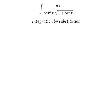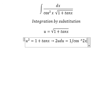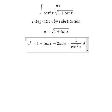I will put u equals to this one (√(1 + tanx)). We put the square for both sides to cancel the square root. Later, we do the derivative for both sides, so we have 2u du equal to 1 over cosine x square dx.